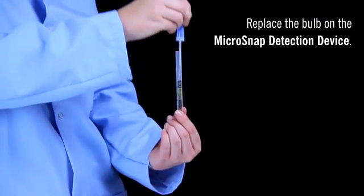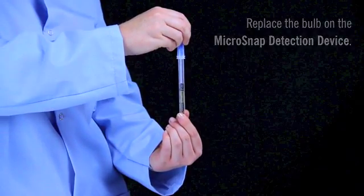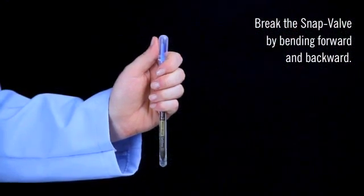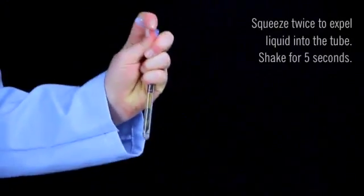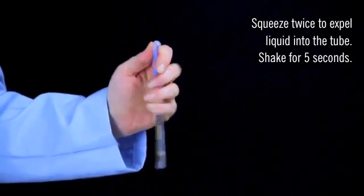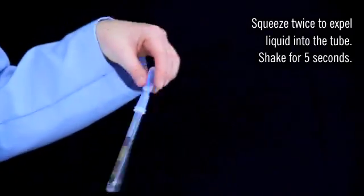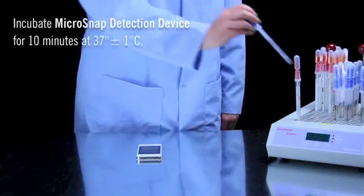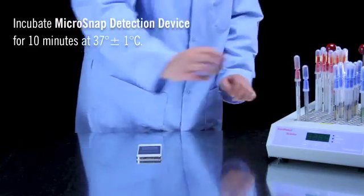Replace the bulb on the detection device. Hold the swab tube firmly and use the thumb and forefinger to break the snap valve by bending the bulb forward and backward. Squeeze the bulb twice to expel liquid into the tube and shake for 5 seconds. Incubate for an additional 10 minutes.